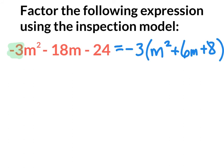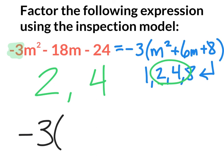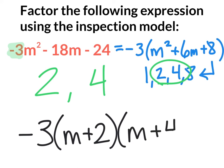Now we have to find two numbers that multiply to give positive 8 and add to give positive 6. Let's list the factors of 8. We're concerned with 2 and 4 in this example, so let's write those down on the side. We're looking for those two factors to multiply to give positive 8 and add to give positive 6 — and that will happen. We can rewrite our final answer as negative 3, the greatest common factor, times m plus 2 multiplied by m plus 4.